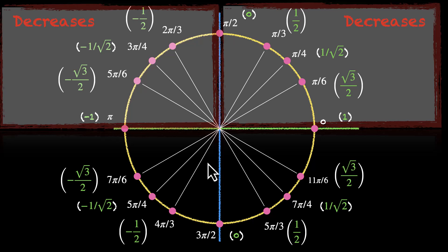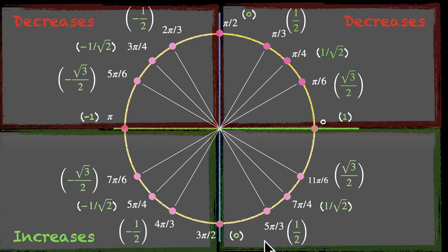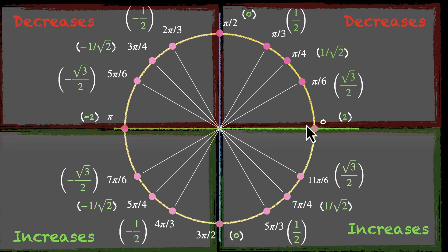What happens in the next two quadrants? Minus 1 is the minimum value, so it has to increase after that. The value in the third quadrant increases — it moves from minus 1 to 0. But 0 is not the highest value, so in the fourth quadrant it increases from 0 all the way up to 1. So the value of cos x is decreasing, then decreasing, then increasing, then increasing. And the circle goes on.